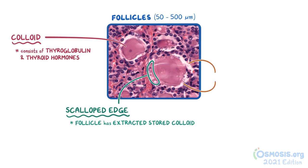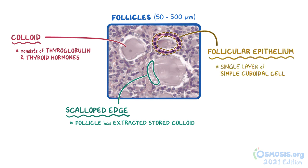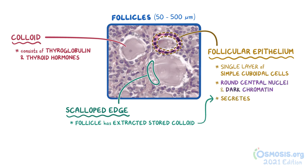The clear space around the colloid is just an artifact caused by the colloid shrinking in comparison to the follicular wall. The follicular epithelium is made of a single layer of simple cuboidal cells, with round central nuclei and dark chromatin. These cells are responsible for secreting thyroid hormones when needed.